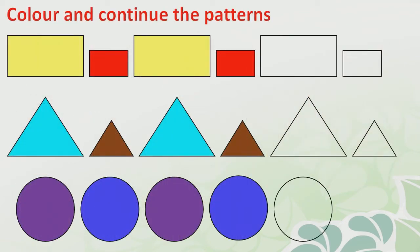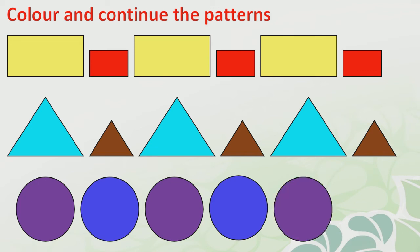Color and continue the patterns. You have to continue this pattern by using different colors. First: yellow, red, yellow, red — and after red, which? Yellow. Then again red. Then: blue, brown, blue, brown — then blue and brown. Now, which shape is this? This is a circle. Can you identify which color is this? Purple, blue, purple, blue. So after blue, which color is going to be the next one? That is purple.